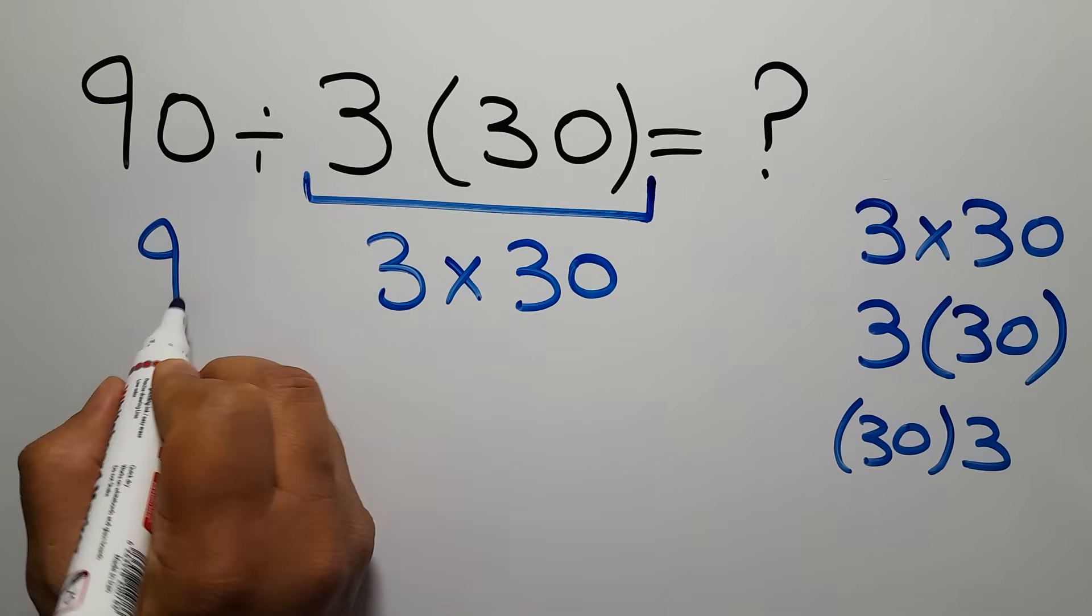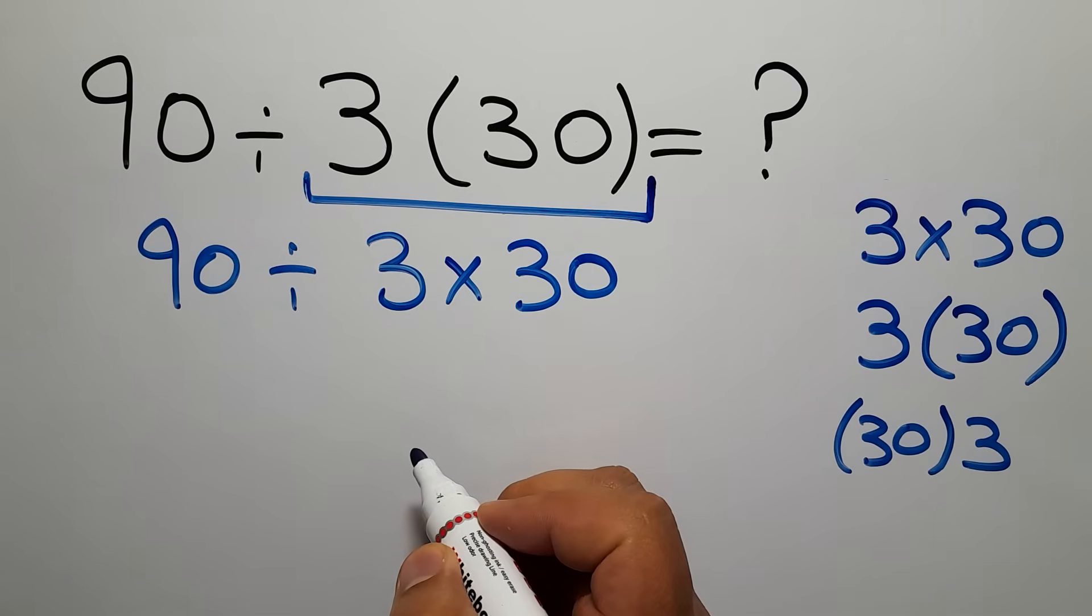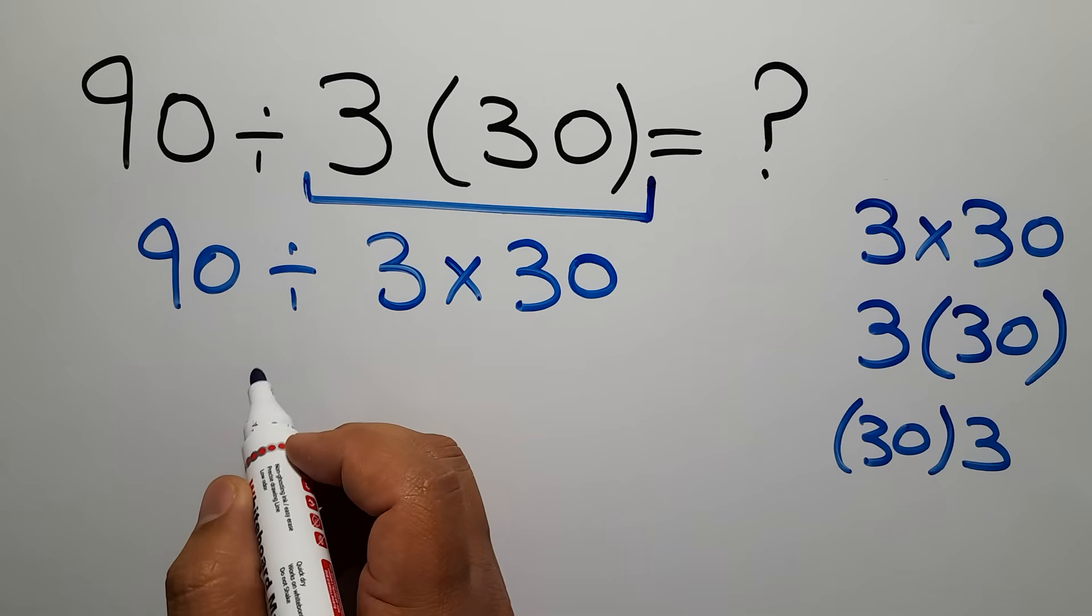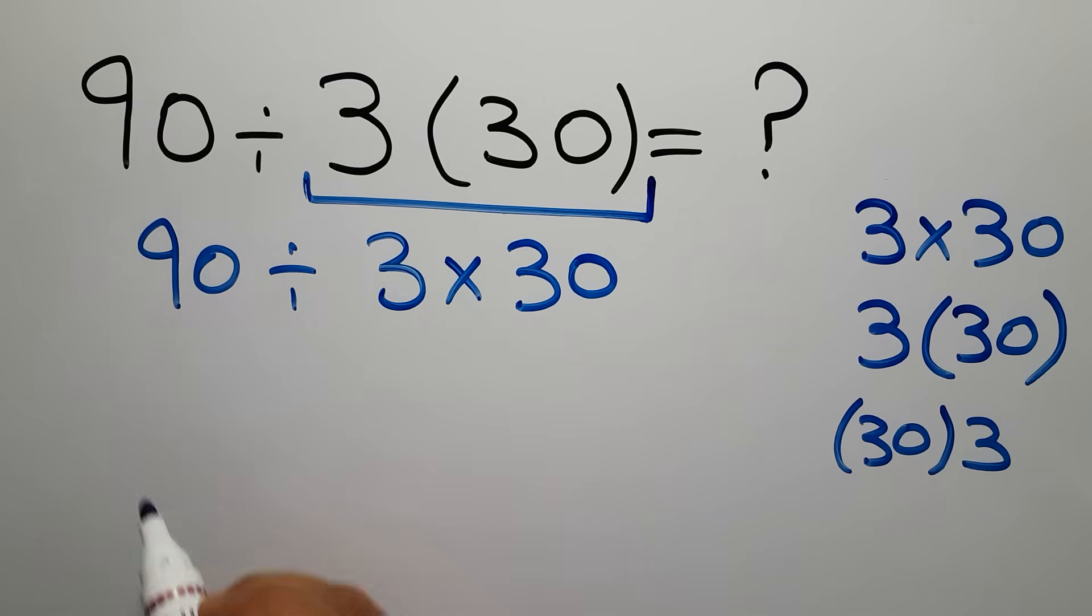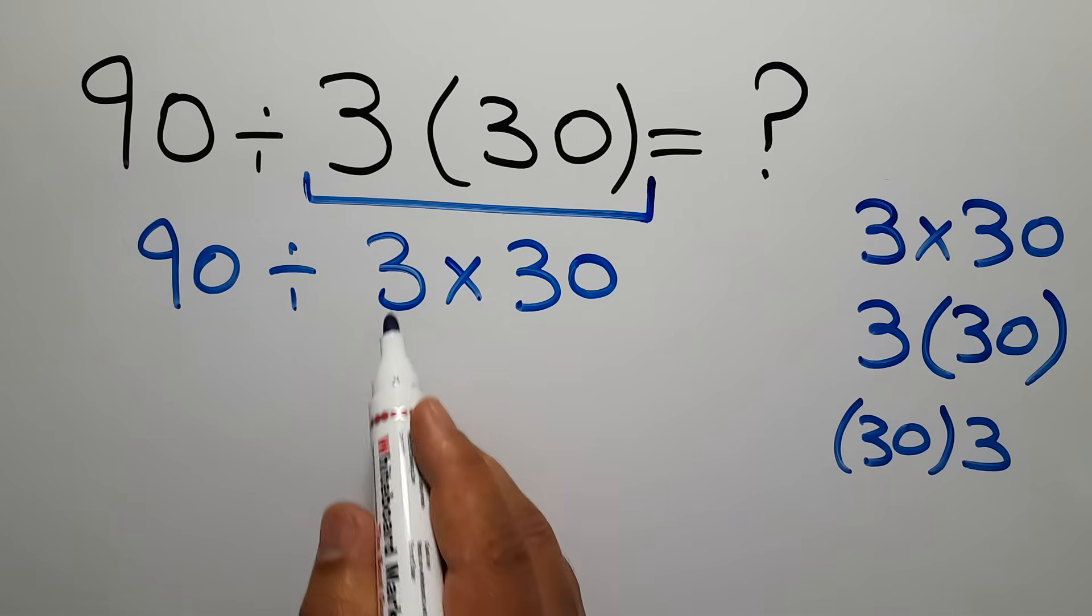So we have 90 divided by 3 then times 30. Multiplication and division have equal priority and we have to work from left to right. So first this division not this multiplication.